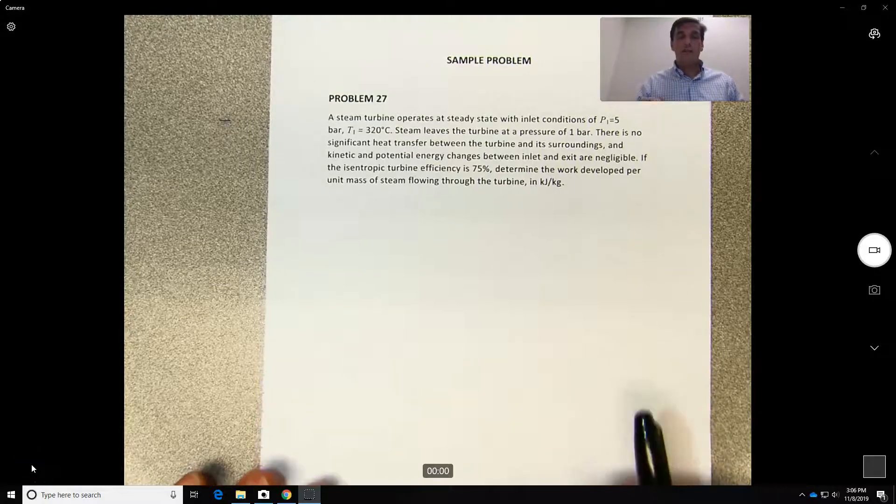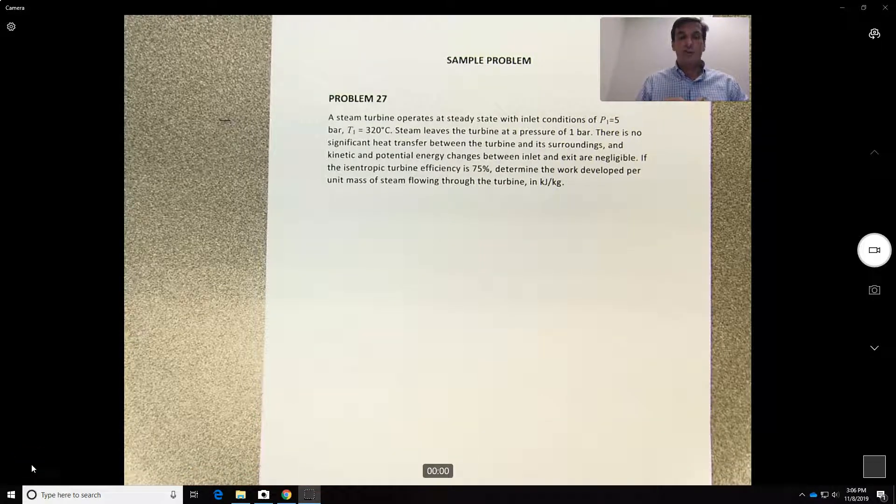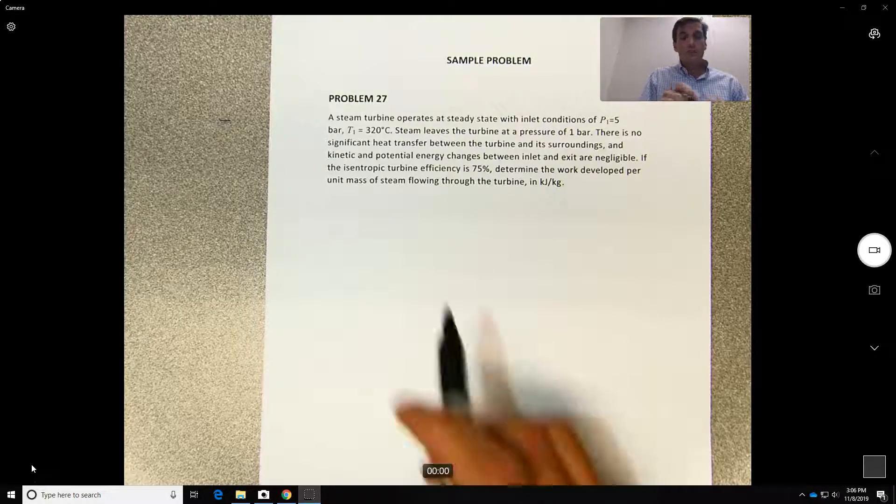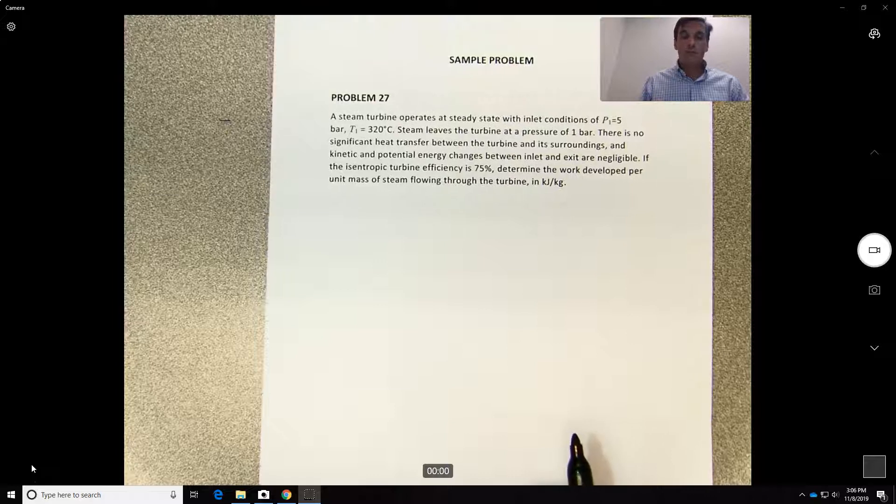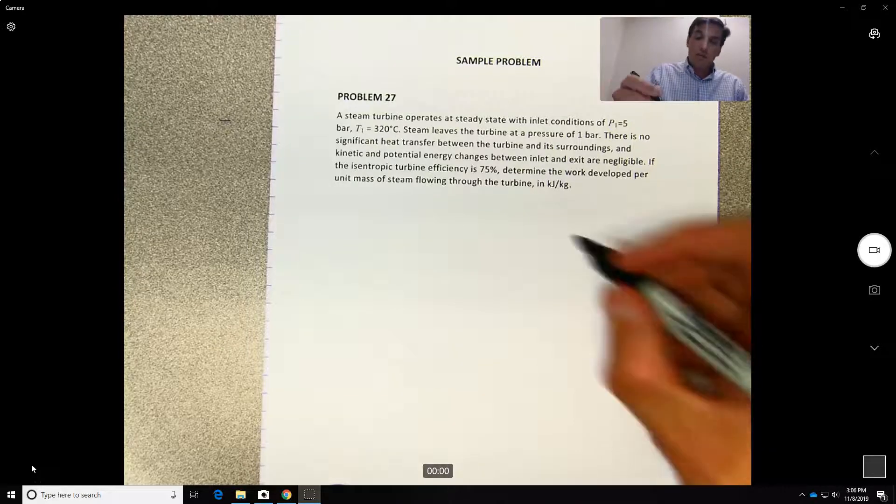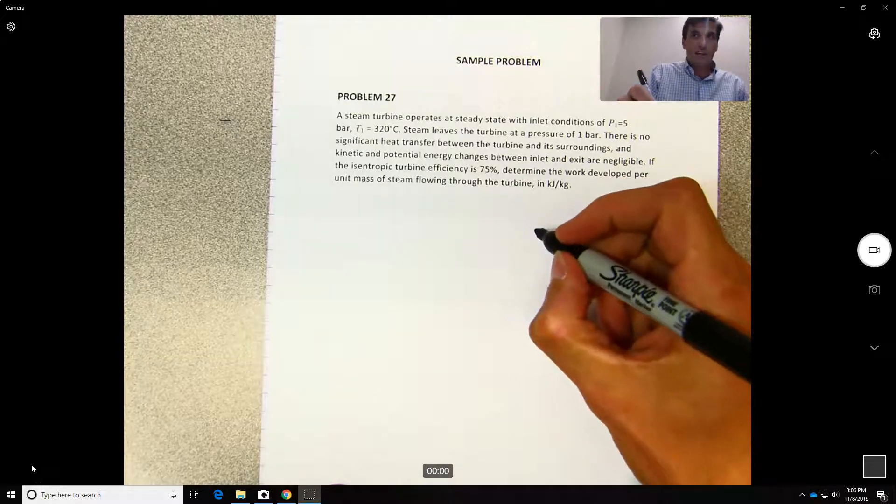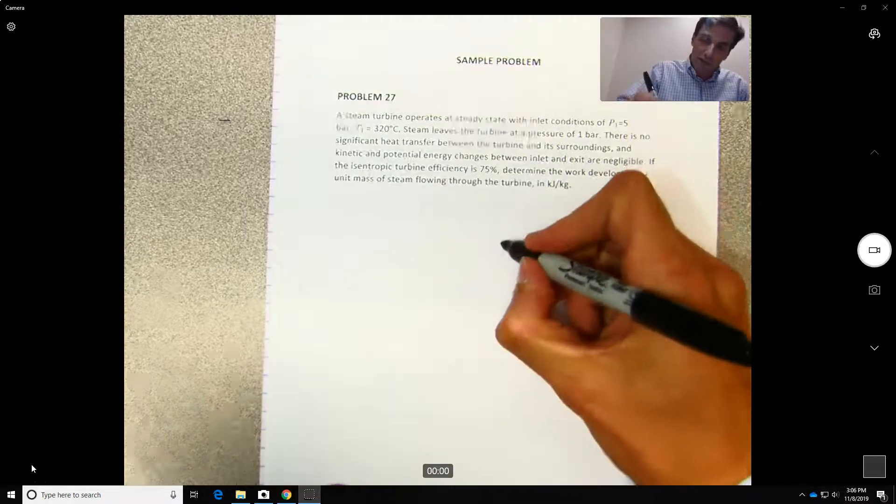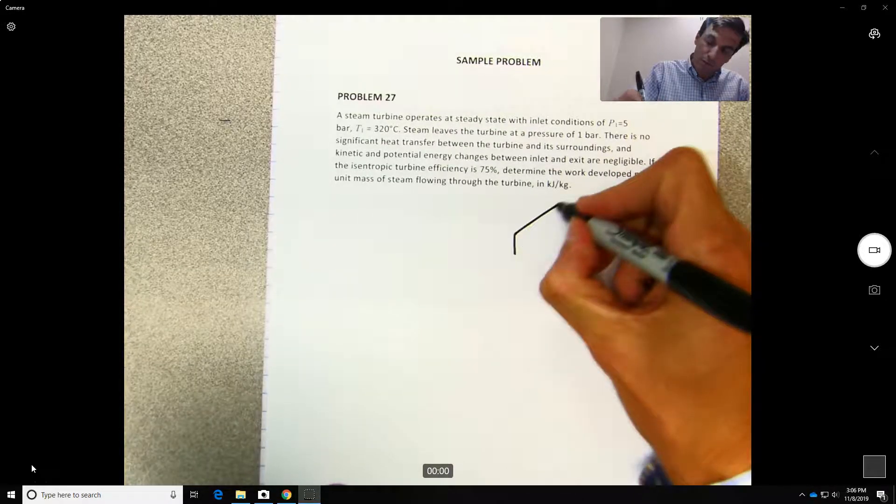Okay, welcome back. Let us solve a problem about the turbine efficiency, the isentropic turbine efficiency. In this problem we have a steam turbine operating at steady state with inlet conditions of 5 bars and T1 equals 320 degrees Celsius.